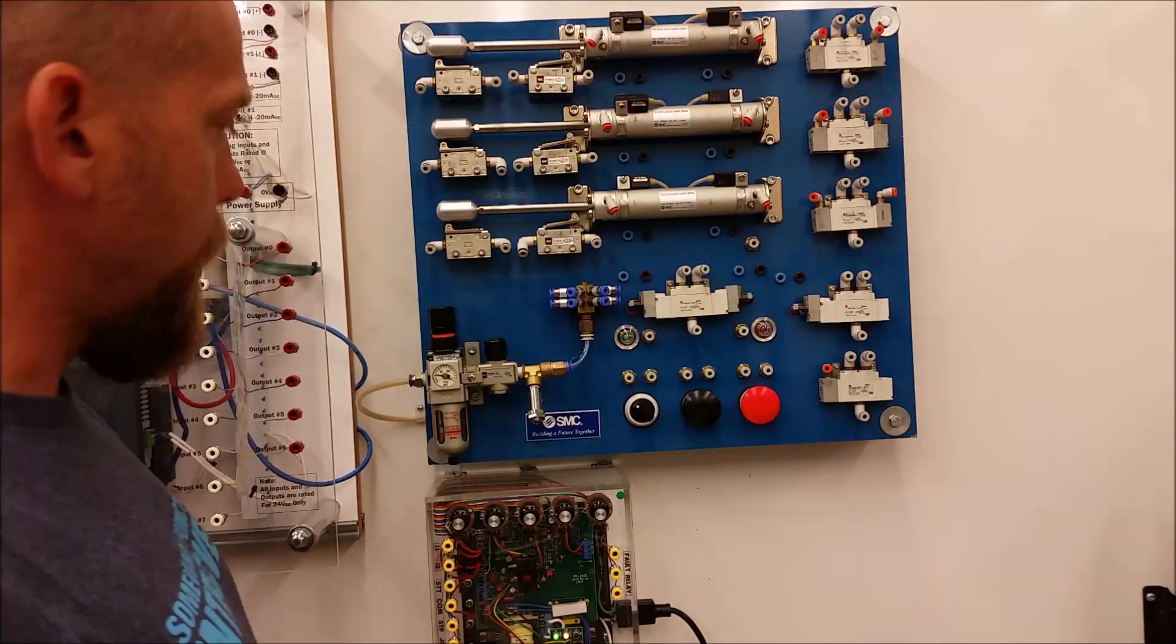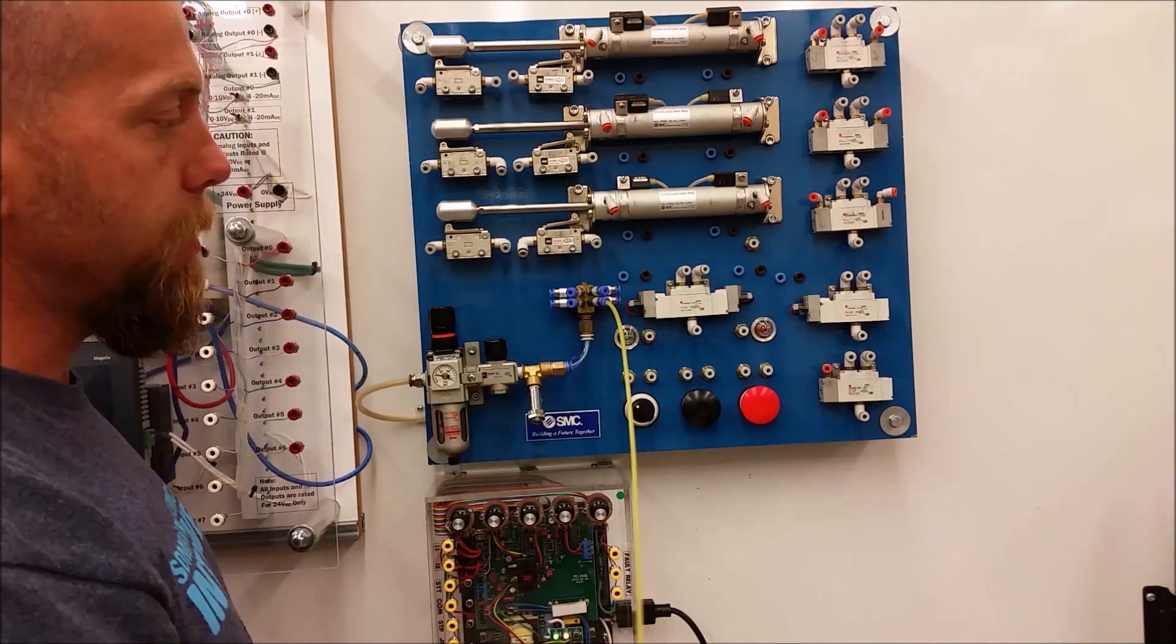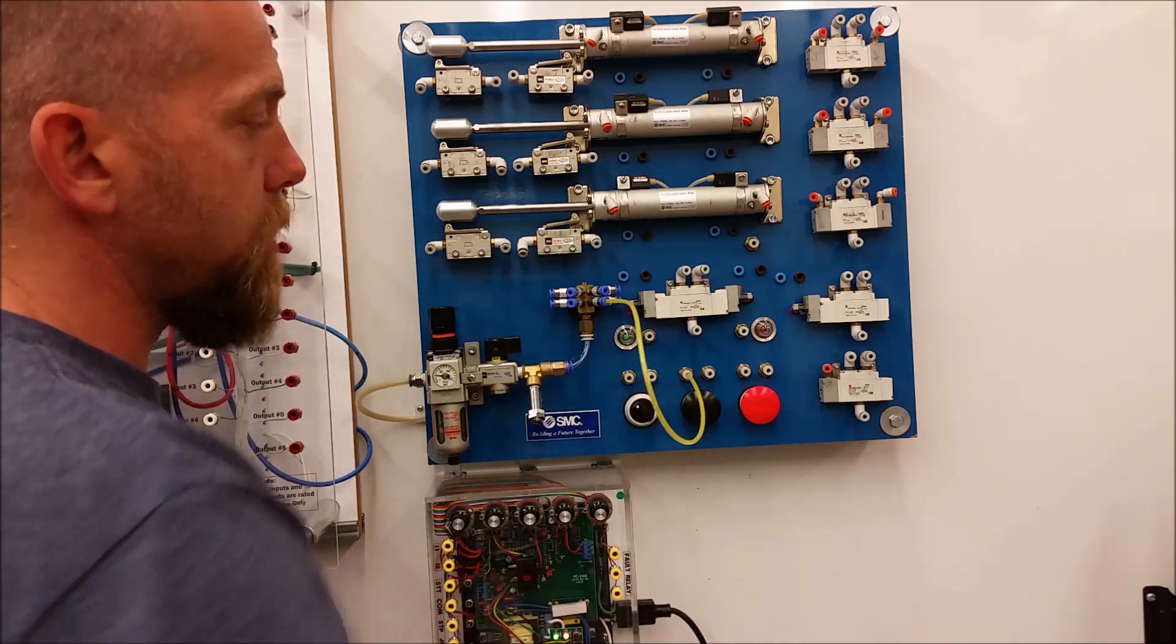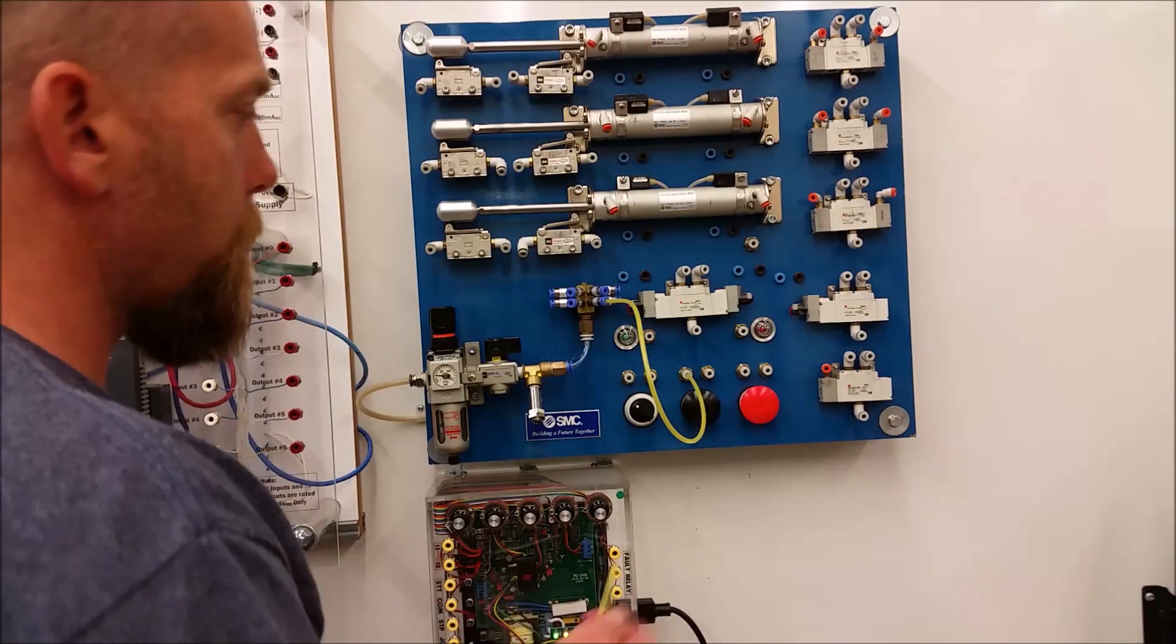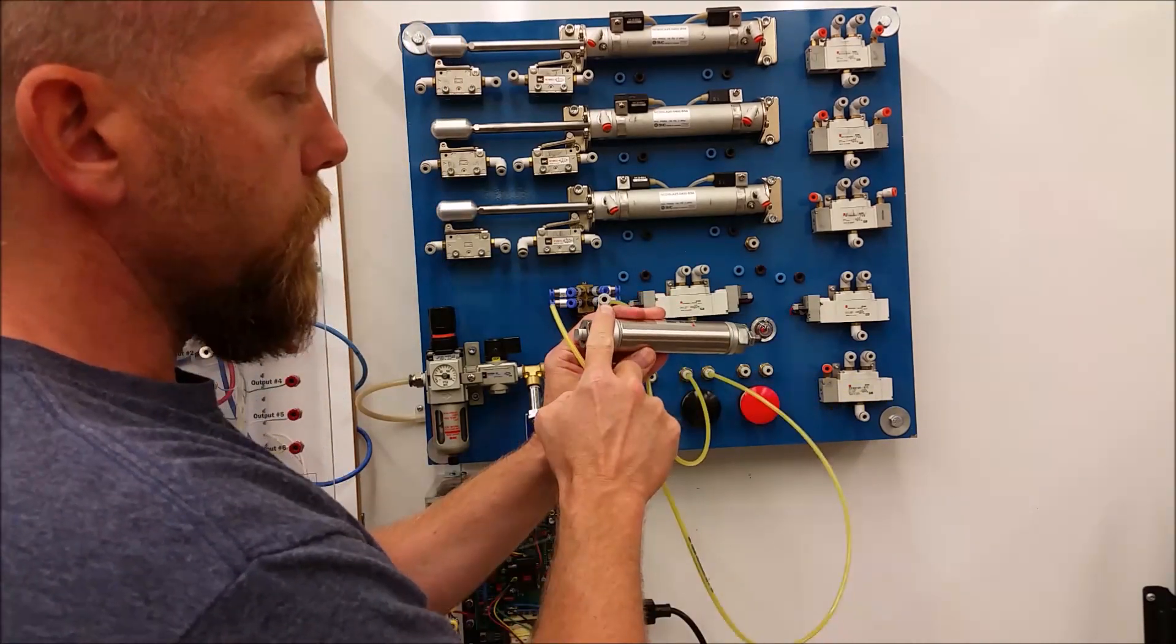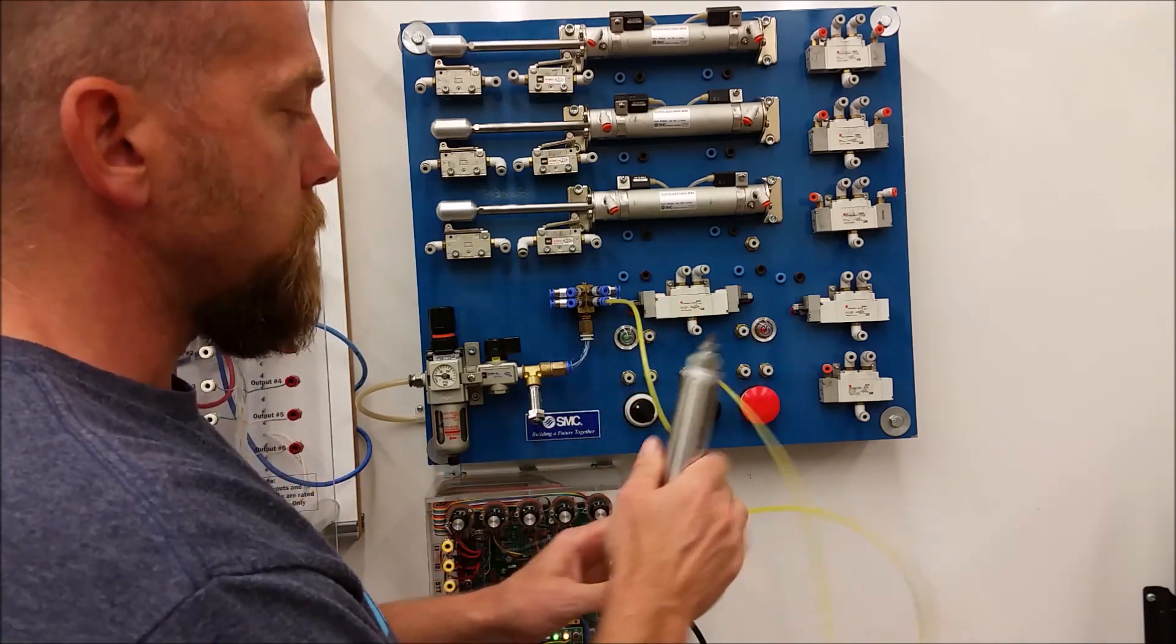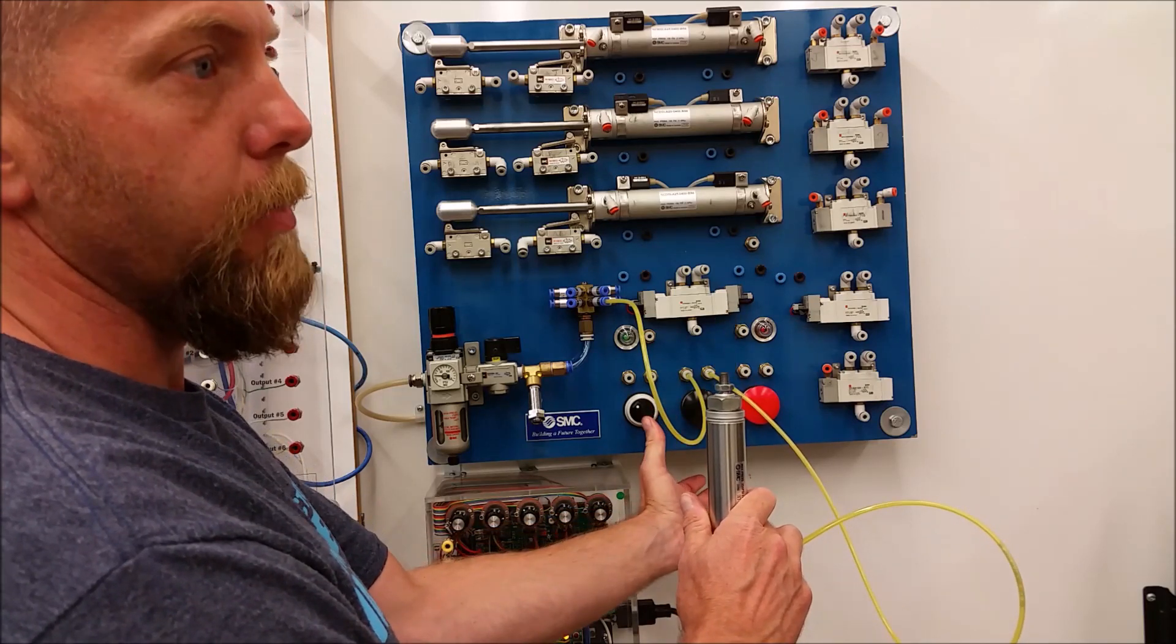All right, guys, lab number one, nice and easy. So what we're going to do is we're going to go from our manifold here. That's going to go into our push button. Okay, we're going into the left-hand side for the supply. All right, we turn this guy on. That's going to provide us air to our actuator. And then we just need another hose here going from our push button to our single-acting cylinder with a single port. And again, remember, it's got the spring return. This guy goes into our single port, and then as soon as we hit the push button, ta-da! It extends. Let it go, and it retracts. Nice and simple.